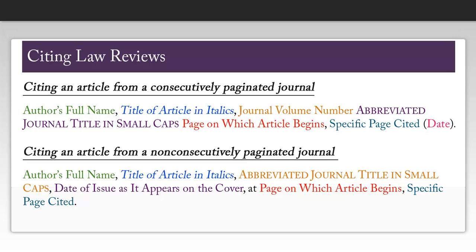For a consecutively paginated journal, what you are going to need is the author's full name, the title of the article in italics, the volume number for the journal, the abbreviated journal title which you can find by using Table T13 in the Blue Book, the page number on which the article begins, the specific page number that you are citing, and the date this article was published.